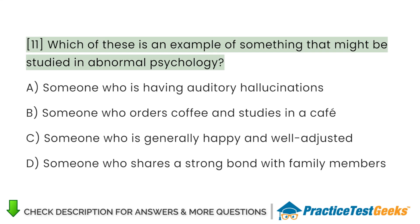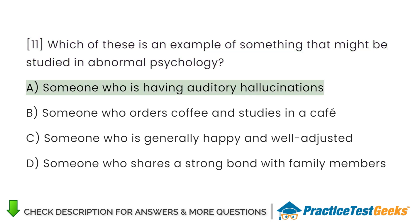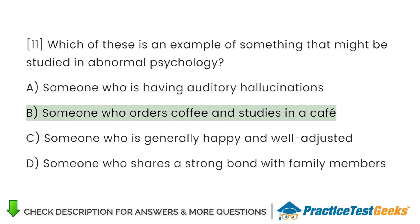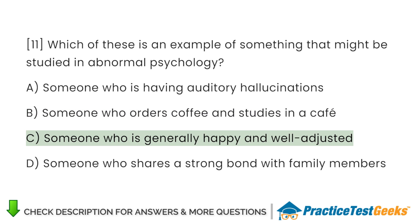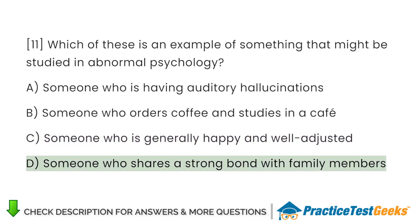Which of these is an example of something that might be studied in abnormal psychology? A. Someone who is having auditory hallucinations B. Someone who orders coffee and studies in a cafe C. Someone who is generally happy and well-adjusted D. Someone who shares a strong bond with family members